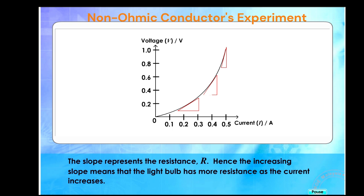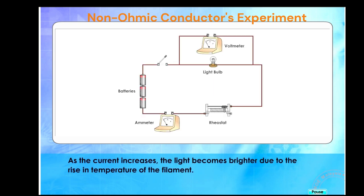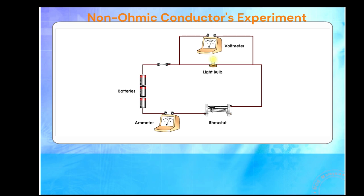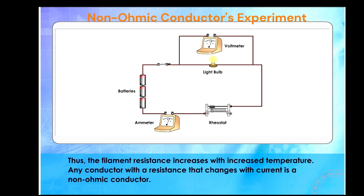Hence, the increasing slope means that the light bulb has more resistance as the current increases. As the current increases, the light becomes brighter due to the rise in temperature of the filament. Thus, the filament resistance increases with increased temperature. Any conductor with a resistance that changes with current is a non-ohmic conductor.